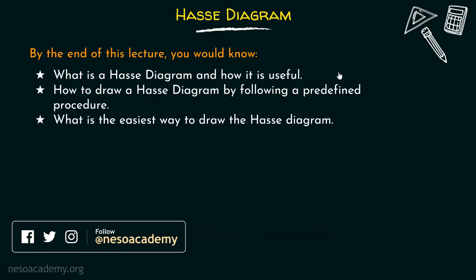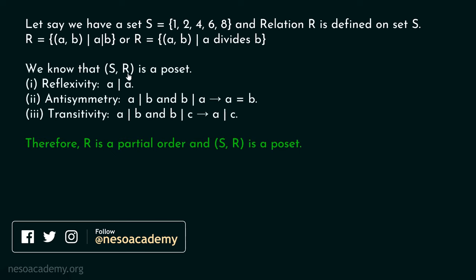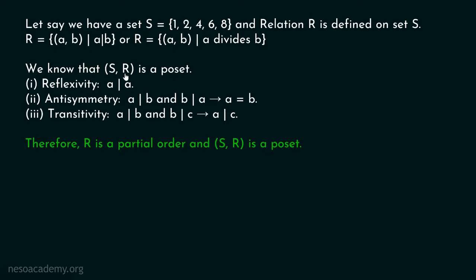Without any further delay, let's get started. Let's say we have a set S which consists of some elements and relation R is defined on this set S. R is nothing but the set of all ordered pairs (A, B) such that A divides B. We know that (S, R) is a poset, because reflexive, anti-symmetric, and transitive properties are satisfied for relation R. Therefore, it is clear that (S, R) is a poset.